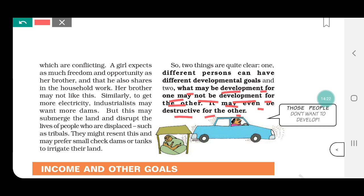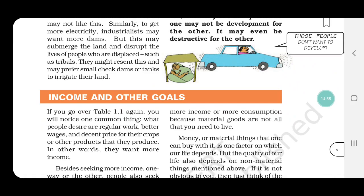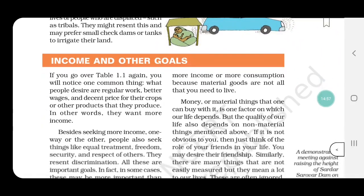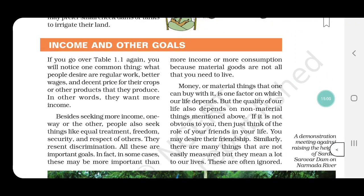It is possible that what is development for one person is not development for another. It is also possible that what is development for one person is destruction for another. So here two things became clear — first, every person's developmental goal is different, and second, what is development for one person may not be development for another. Now our first topic ends and the next topic comes: Income and Other Goals.